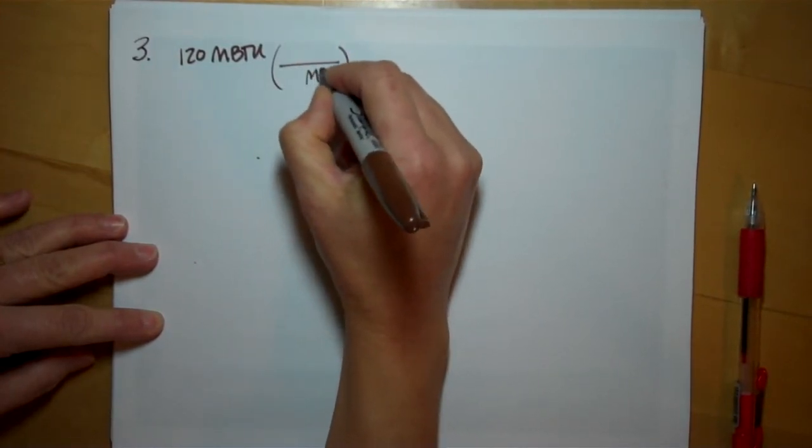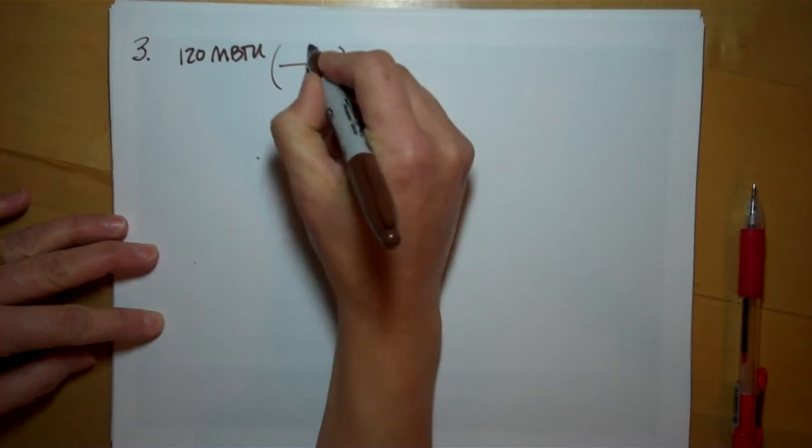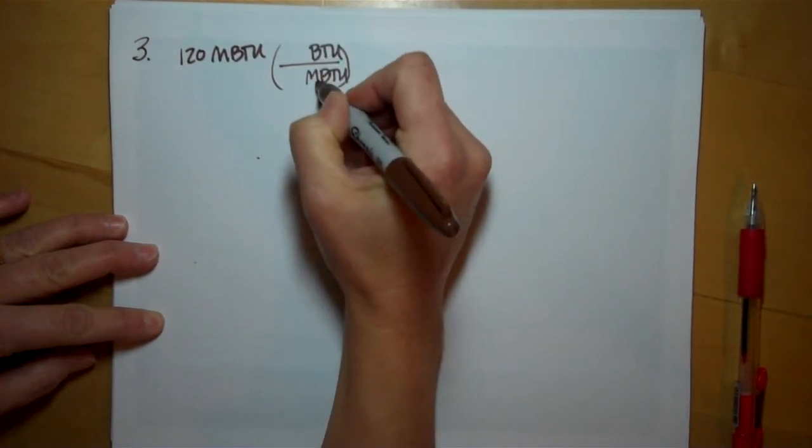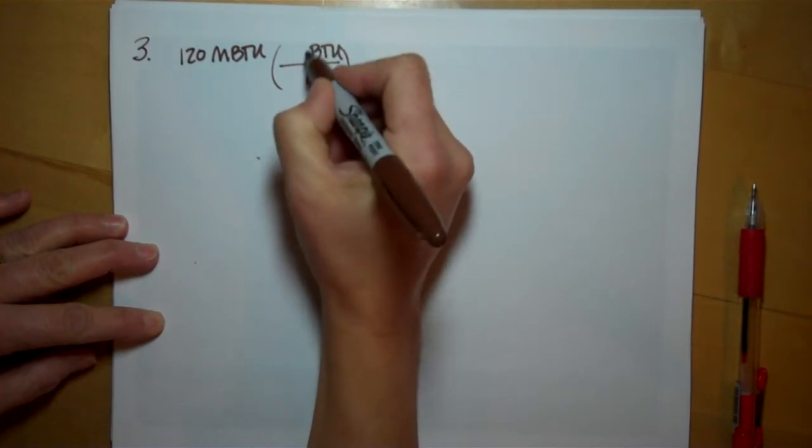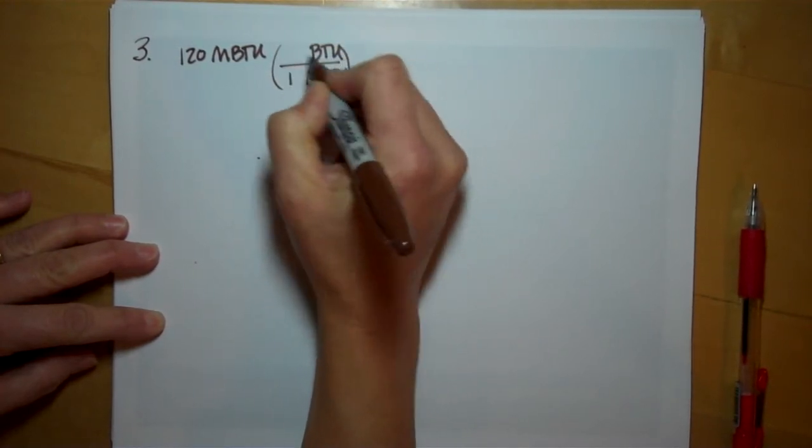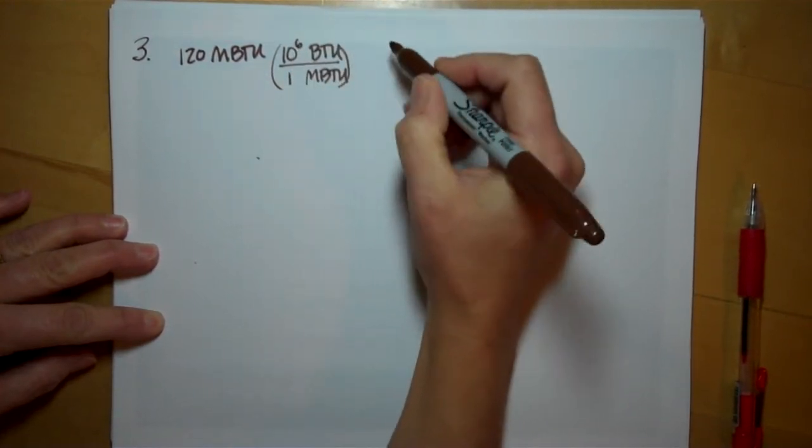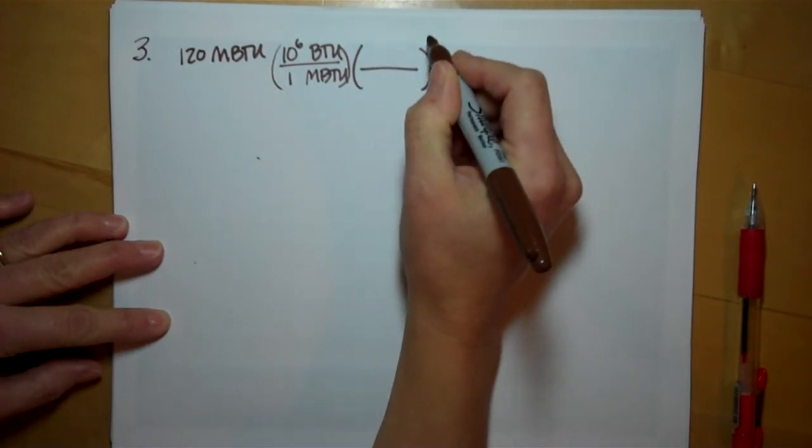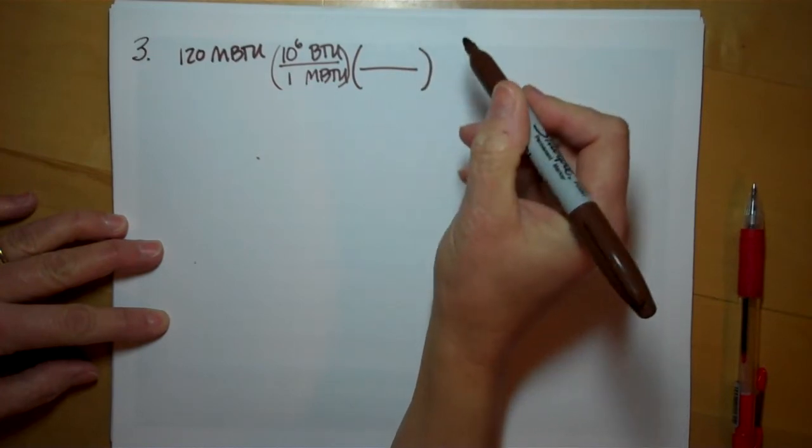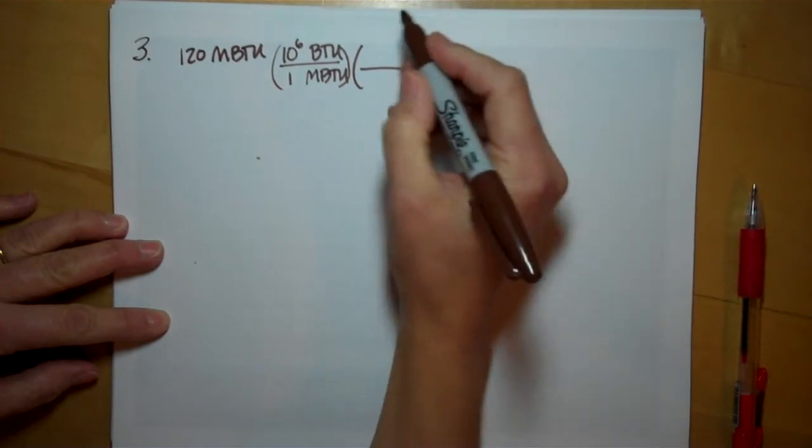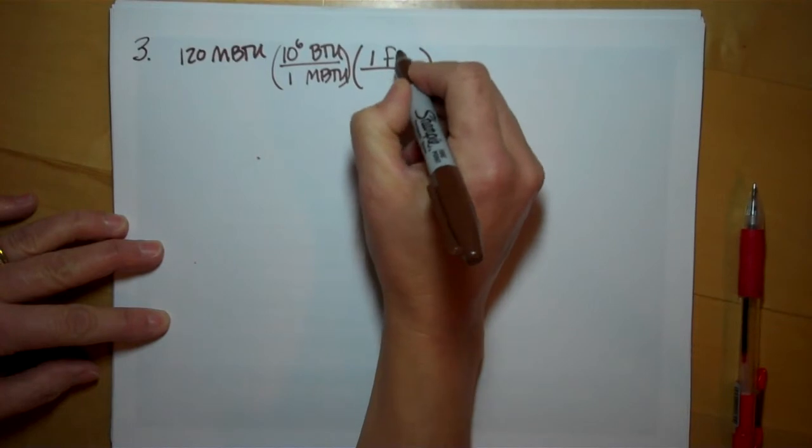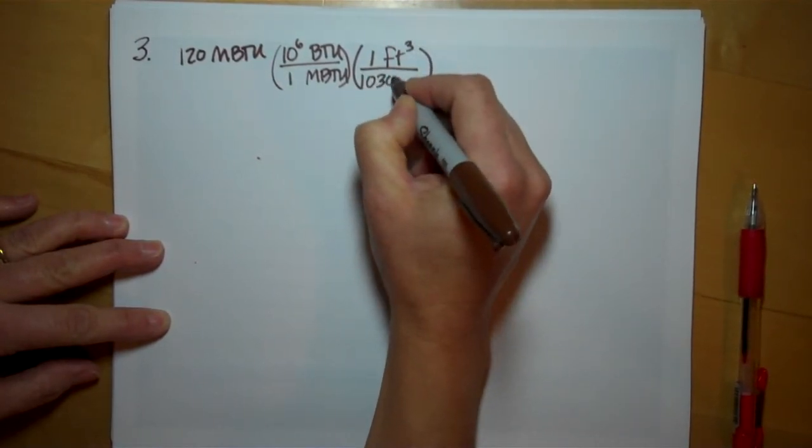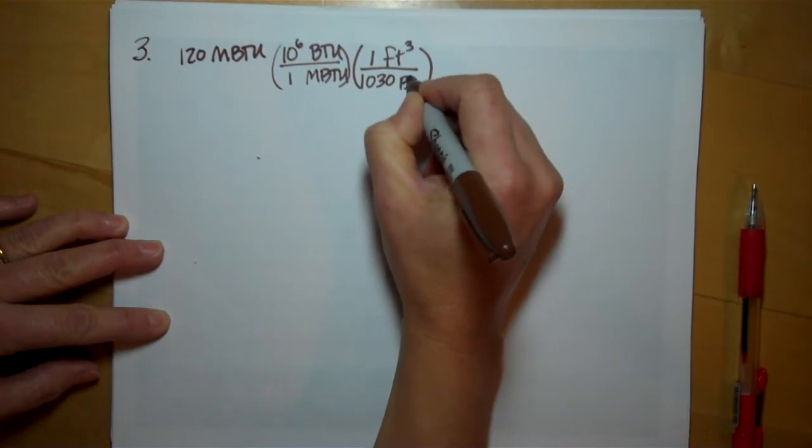Get rid of mega BTUs by putting them in the denominator. And we know the relationship between mega and one. There's one mega BTU is 10 to the six BTUs. And we know how many cubic feet of natural gas produce how many BTUs. It's a given. Every one cubic foot of natural gas you have, you produce 1030 BTUs of energy.